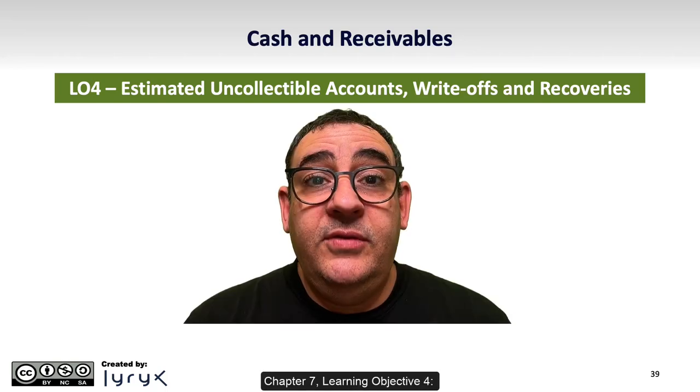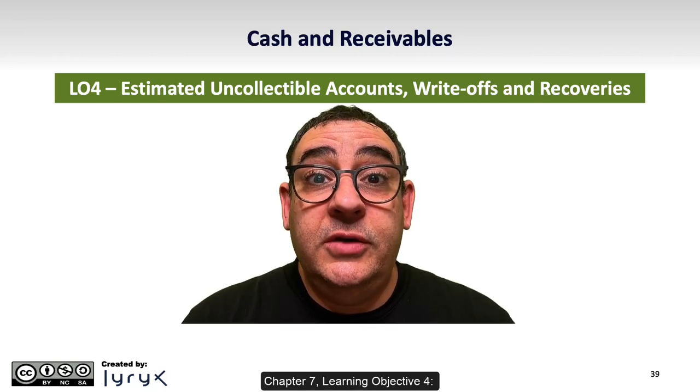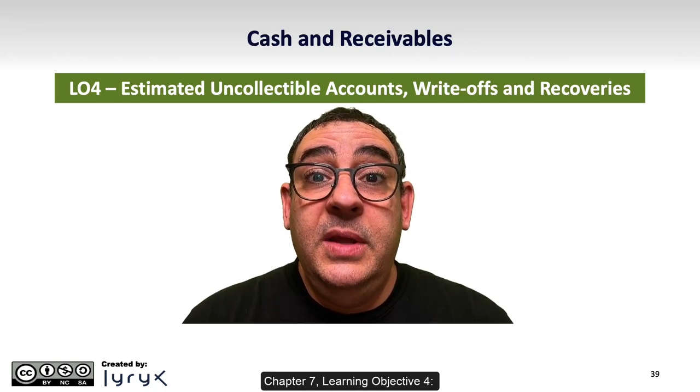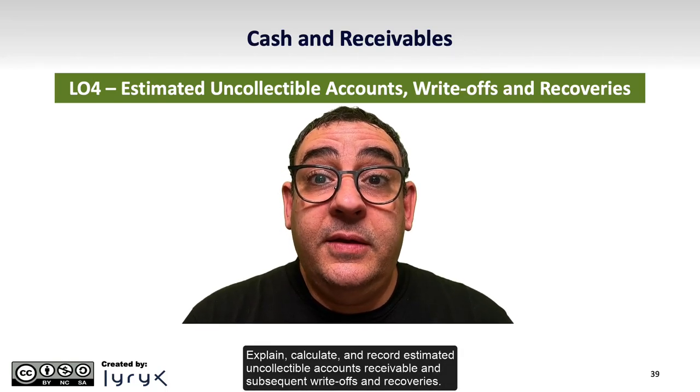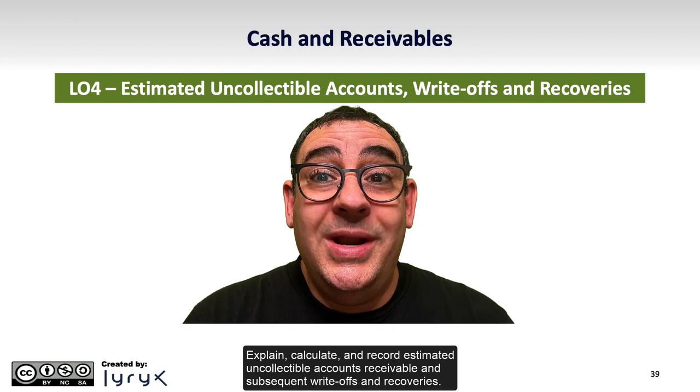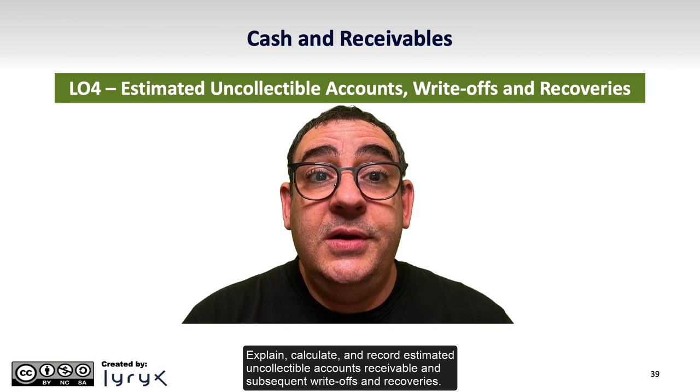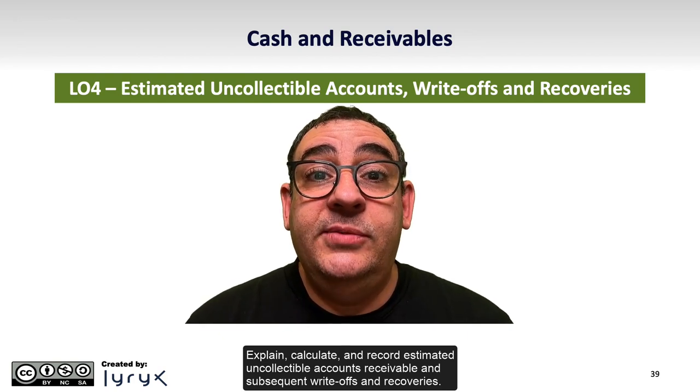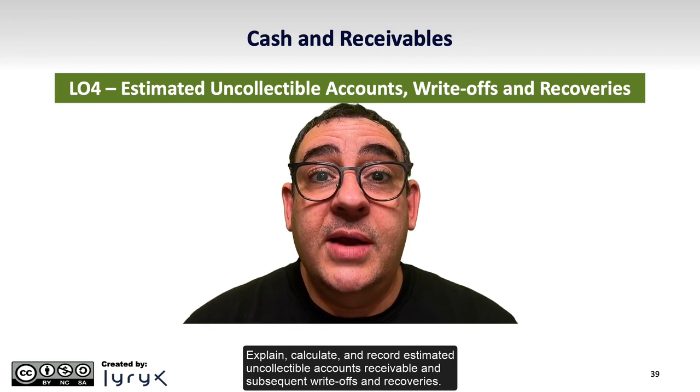Chapter 7, Learning Objective 4. Explain, calculate, and record estimated uncollectible accounts receivable and subsequent write-offs and recoveries.